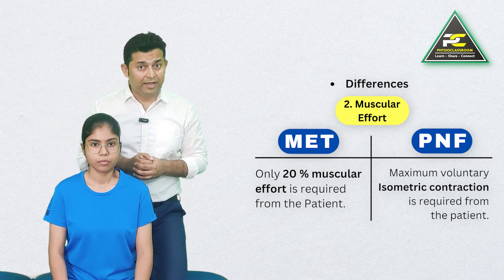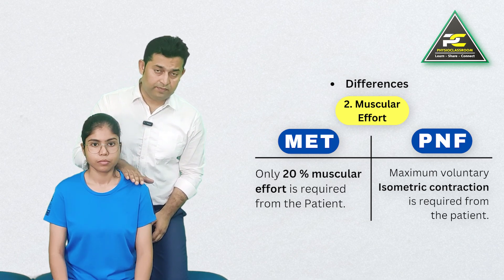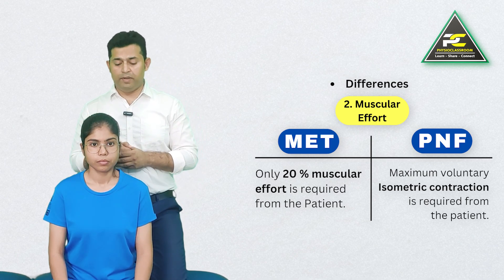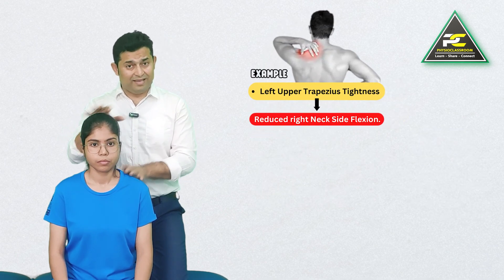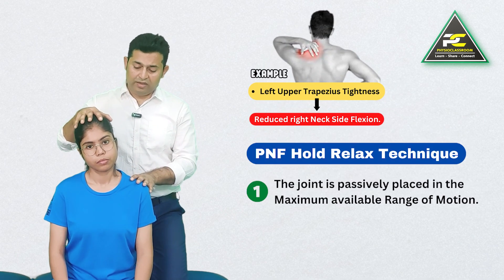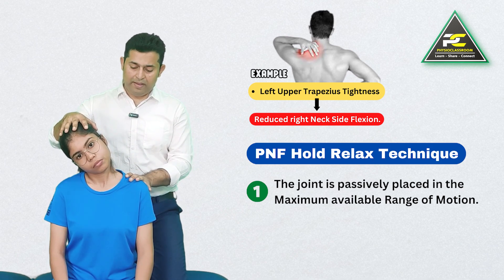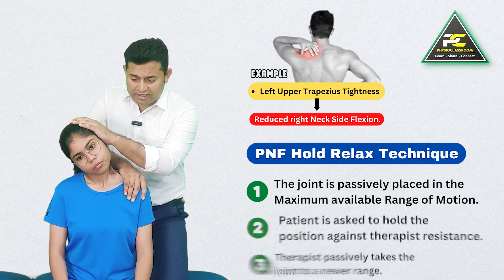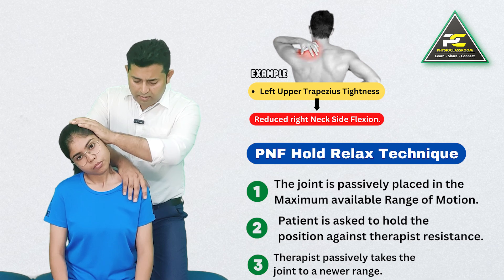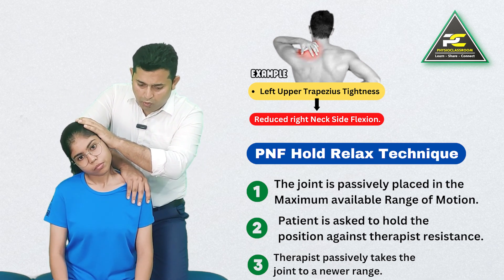In the PNF concept, the technique to improve left trapezius elongation and right side flexion is to passively position the head and neck into the maximum available range of motion. The patient is asked to hold the position and not let the therapist push the shoulder down and the head and neck toward the left.